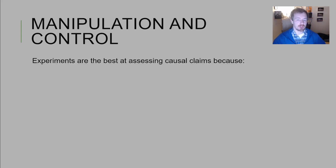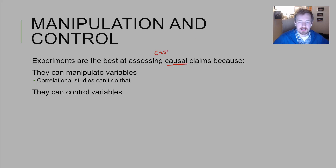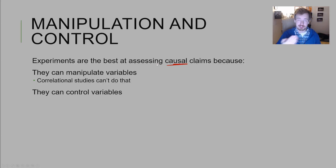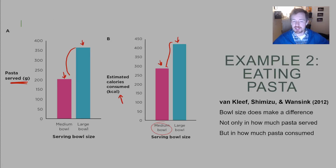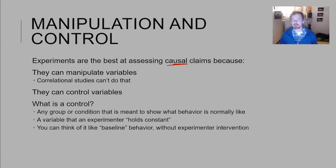Experiments are really good at assessing causal claims. 'Causal' — not 'casual' — means assessing whether something causes a behavior. For instance, it seems that having a larger bowl causes participants to give themselves more food and eat more food. That is what we mean by a causal claim.